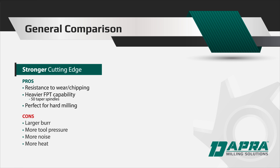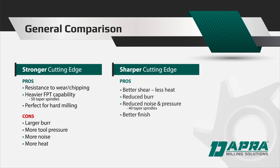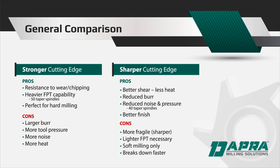When using the stronger edge, expect more noise, higher spindle loads, and greater tool pressure and heat. Conversely, using a sharper edge will create a quieter, smoother cut, generating less heat and burr, while possibly still providing good material removal rates on lighter duty machines. The sharper edge can also have an advantage in long-reach milling tools where tool pressure creates deflection. Remember to stay more conservative on chip loads or feed per tooth to avoid overstressing the cutting edge, which could lead to chipping.